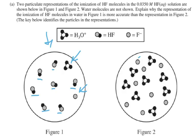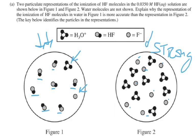In figure two, we don't have any HF molecules — they've all broken up into F minuses. That would be a good representation of a strong acid like HCl or HBr, but this is HF. We have to note that HF is only a tiny bit broken up. Figure two shows complete dissociation, which represents a strong acid, so figure one is the better representation.